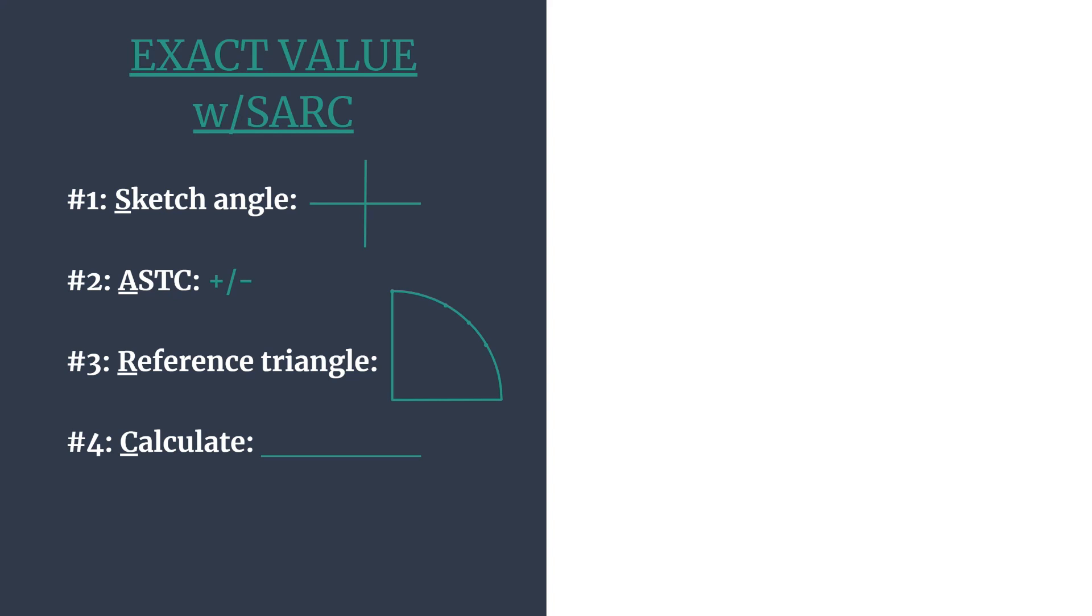S stands for sketch the angle, so we'll sketch the terminal side of the angle. The A stands for ASTC, which is our acronym that we use to decide which trig functions are positive in each quadrant. The R stands for reference triangle, so we'll find our reference angle and then we'll use that to get our special right triangle and the corresponding coordinates.